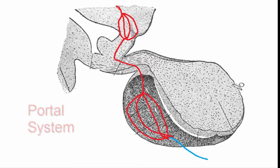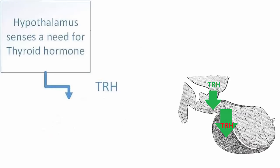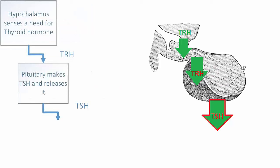The hypothalamus monitors body conditions and senses the need for more thyroid hormone. It makes TRH — thyroid releasing hormone — and dumps it into the capillary network. The hormone is then carried to the capillary network in the pituitary, which triggers the release of TSH, thyroid stimulating hormone, which then goes into the general circulation and is carried everywhere in the body.